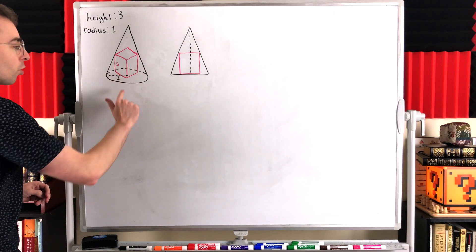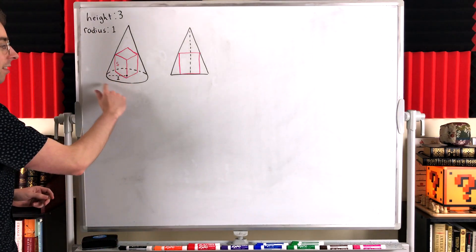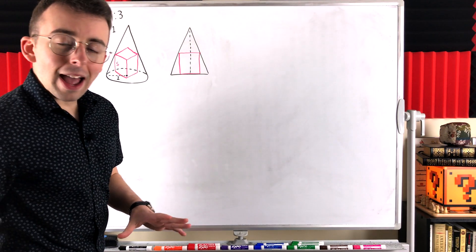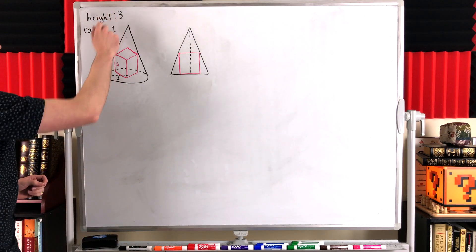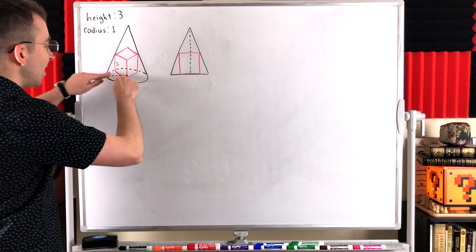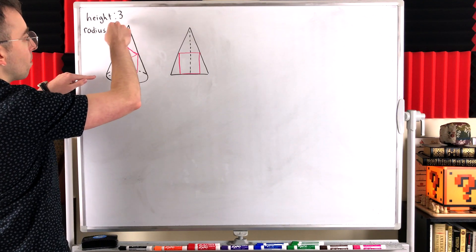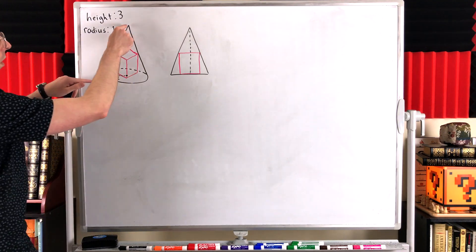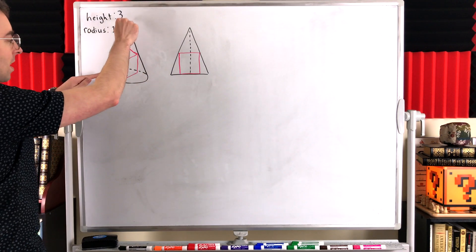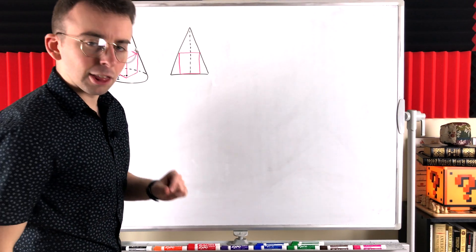That produces a circular base, and we're given that the radius of our circular base is one. We also have that the height of our right circular cone is three — that's the distance from the base to the top of the cone, called the vertex. So that distance from top down to the base is the height, and it is three.